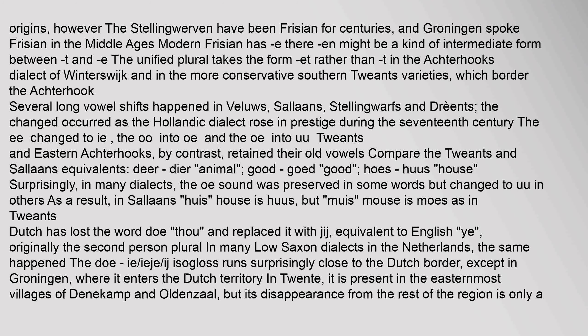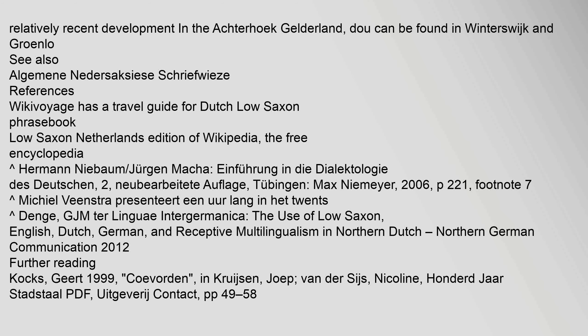Twents and eastern Achterhooks, by contrast, retained their old vowels. For example, Twents 'deer' versus Sallands 'dier' (animal), 'good' versus 'goed,' and 'hoes' versus 'hewis' (house). Surprisingly, in many dialects the OO sound was preserved in some words but changed to UU in others. Dutch has lost the word 'doe' and replaced it with 'jij,' equivalent to English 'you,' originally the second-person plural. In many Low Saxon dialects in the Netherlands, the same happened: 'doe' became 'ie/ieje.' This isogloss runs surprisingly close to the Dutch border, except in Groningen. In Twente, 'doe' is present in the easternmost villages of Denekamp and Oldenzaal, but its disappearance from the rest of the region is only a relatively recent development. In the Achterhooks of Gelderland, 'doe' can be found in Winterswijk and Groenlo.